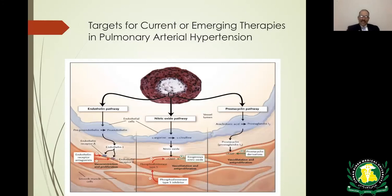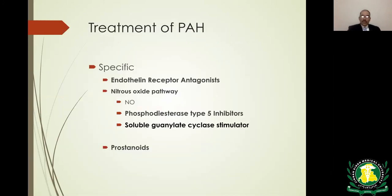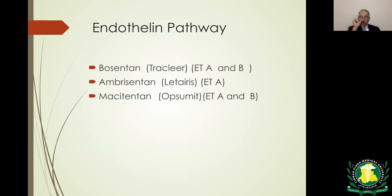Medications target the same three pathways involved in pathogenesis: the endothelin pathway, nitric oxide pathway, and prostacyclin pathway. Specific drugs include endothelin receptor antagonists, nitric oxide pathway agents including phosphodiesterase type 5 inhibitors and soluble guanylate cyclase stimulators such as riociguat, and prostanoids. Endothelin receptor antagonists include bosentan, ambrisentan, and macitentan.